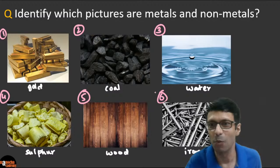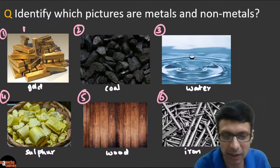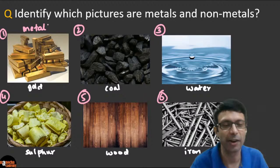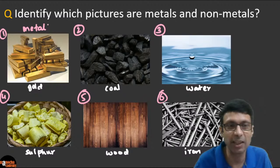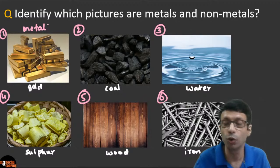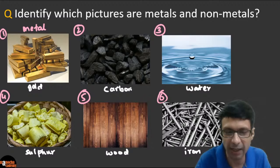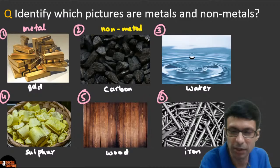The first one — gold. What do you think, is it a metal or non-metal? A lot of you are saying gold is a metal — correct, gold is a metal. Now what about coal? The main content of coal is carbon, so rather than coal let's write carbon here. Carbon is a non-metal.